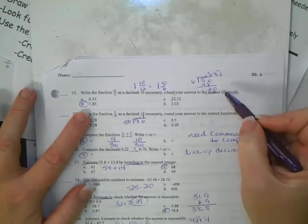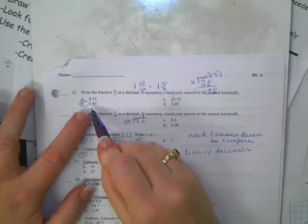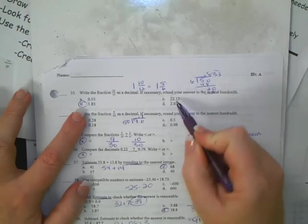Alright, writing this fraction as a decimal. It's top in and bottom out. And I just had to get started. I didn't even need to finish. But I could. 50 into 400 is 8. So that's 0.18.